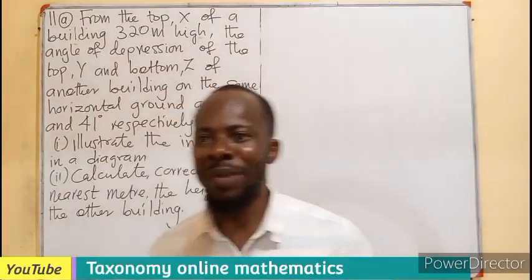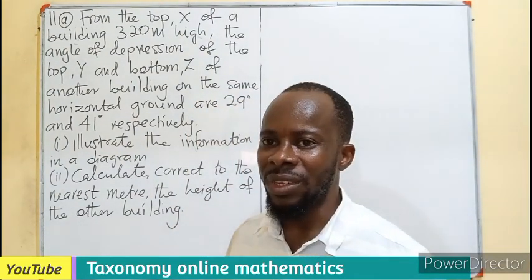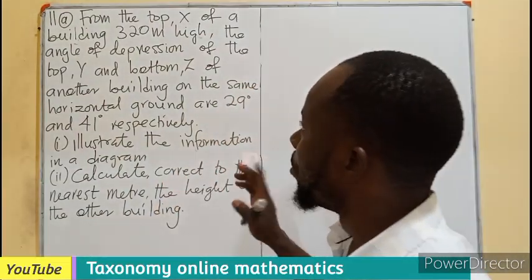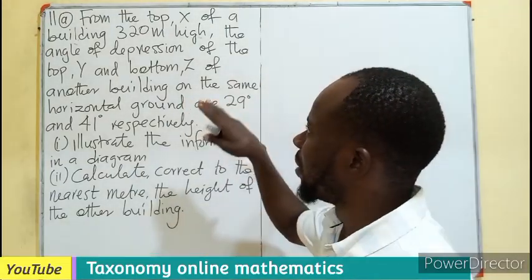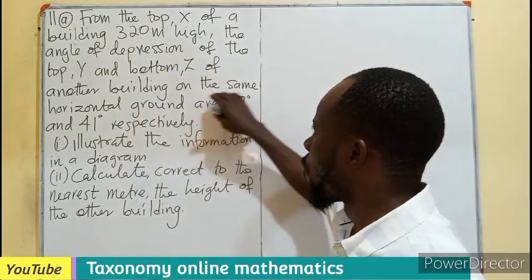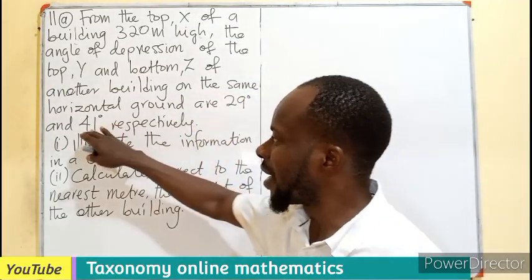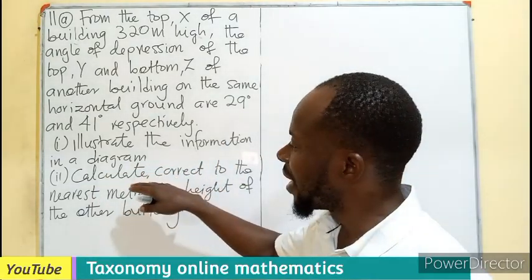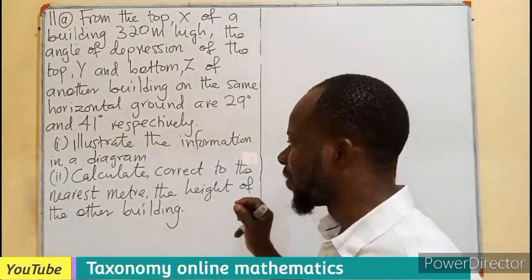Hello, welcome to my channel. Question number 11 of the WAEC 2023 September edition for Ghanaians. From the top X of a building which is 320 meters high, the angle of depression of the top Y and the bottom Z of another building on the same horizontal ground are given as 29 degrees and 41 degrees respectively. We are to illustrate this information on a diagram and calculate, correct to the nearest meter, the height of the other building.